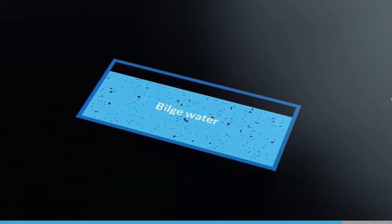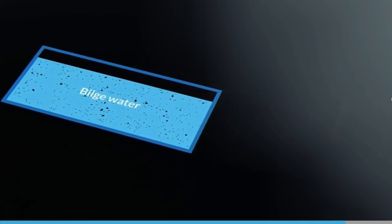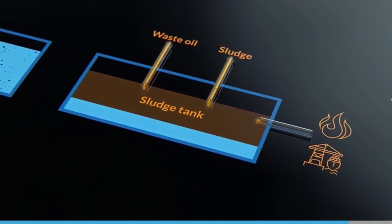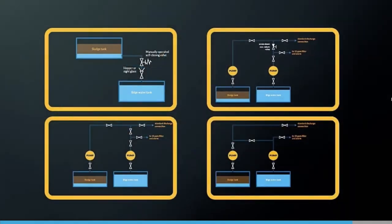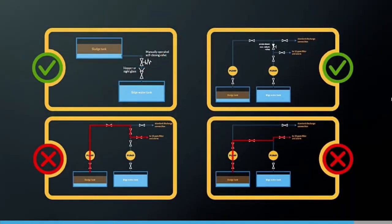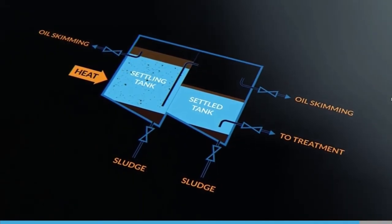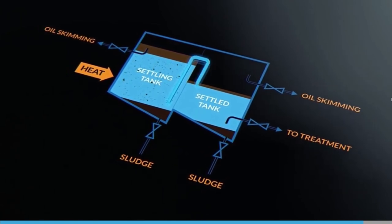The bilge holding tank is for bilge water. Waste oil or sludge should go to the sludge tank, from where it can either be burned in an incinerator or discharged to shore reception facilities. MARPOL specifies which arrangements are acceptable and which are not. The best designs of bilge water tanks use at least two stages in series, with the first stage overflowing into the second.